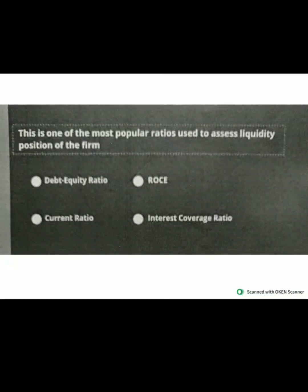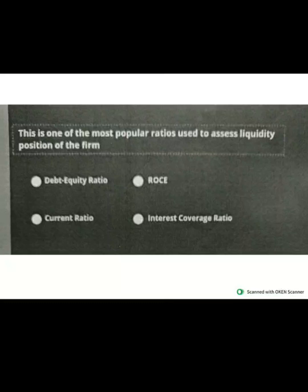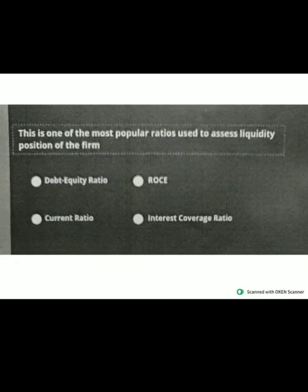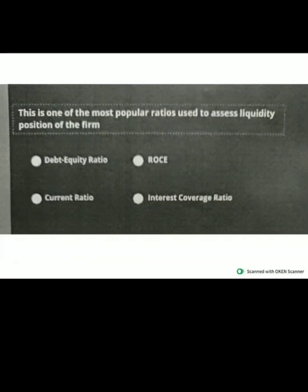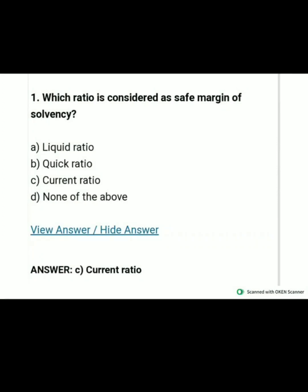This is one of the most popular ratios used to assess the liquidity position of a firm. The options are debt equity ratio, return on capital employed ratio, current ratio, and interest coverage ratio. Out of these four options, current ratio is the right answer. The next question: which ratio is considered as a safe margin of solvency? It is current ratio — option C is correct.